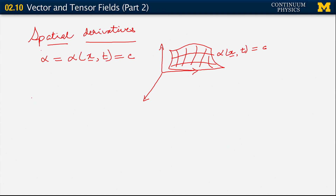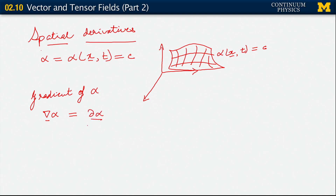The first kind of spatial derivative we are going to look at is simply the gradient of alpha. This gradient of alpha will be written as grad alpha — that symbol is actually the Greek letter nabla. What we mean when we write grad alpha is the following: we are talking of taking derivatives of alpha with respect to xi, and multiplying them by our basis vectors ei. The sum over i is implied, and that's how we write out the gradient of alpha.